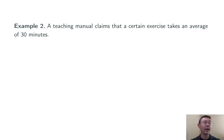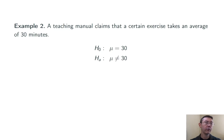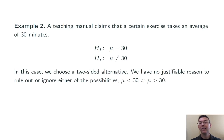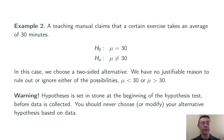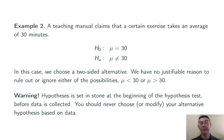Example 2. A teaching manual claims that a certain exercise takes an average of 30 minutes. The null hypothesis is mu equals 30. In this case, I'm going to pick a two-sided alternative, mu not equal to 30, because I have no justifiable reason to rule out the possibility that mu is less than 30 or greater than 30. You should be careful to remember that hypotheses should always be set at the beginning of a hypothesis test, before data is collected. You should never choose or modify your null or alternative hypothesis based on your data.